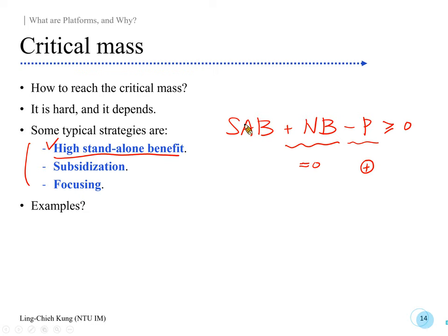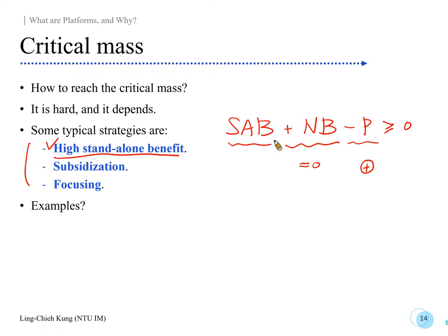If stand-alone benefit is positive, there will be at least some users. You need to create that for some initial users, then those users join and create some network benefit for others, and then other people join as well. So stand-alone benefits serve as the seed for network growth.